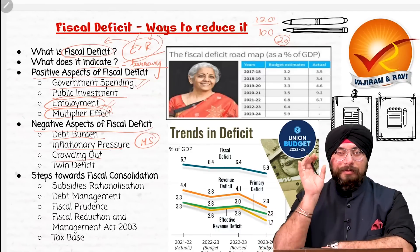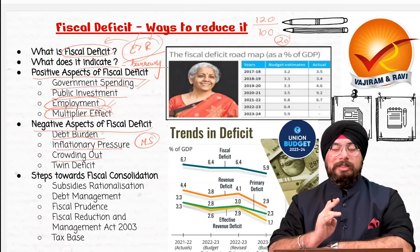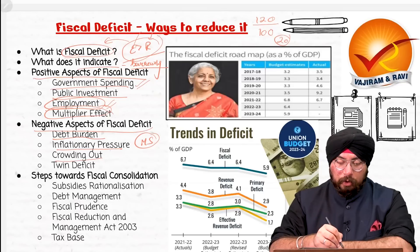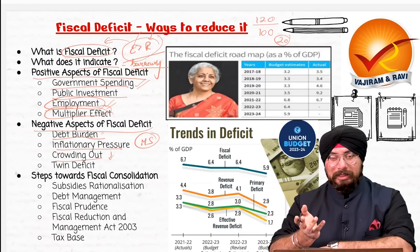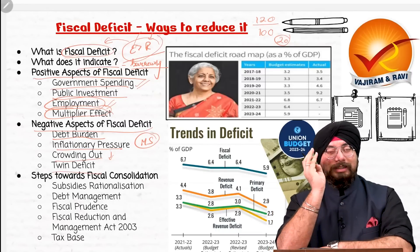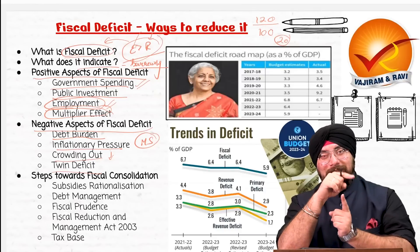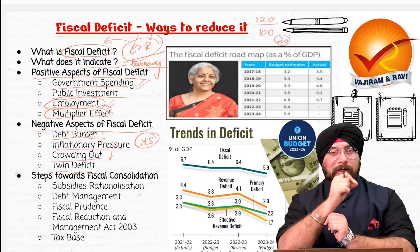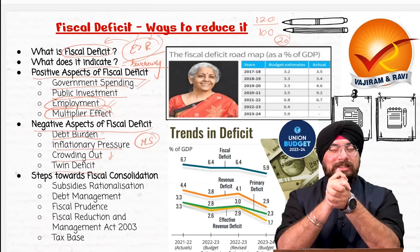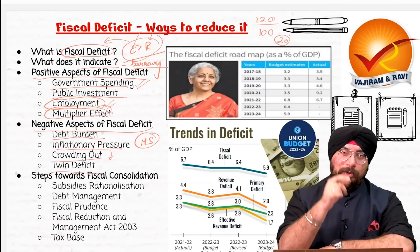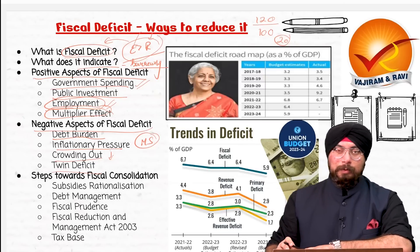That is one negative aspect of fiscal deficit. Then the twin deficit problem: we are not just having fiscal deficit in our country, we also have current account deficit in our balance of payments. When fiscal deficit increases, there is some impact on the current account deficit as well, and this twin deficit problem increases further. Our focus should be to reduce this twin deficit problem rather than fuel it further. So the twin deficit problem is also a negative aspect of fiscal deficit.